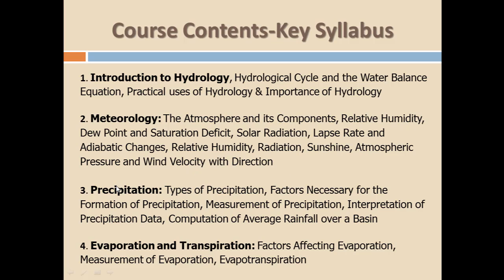Chapter three is very important and is about precipitation. In this chapter we will discuss what precipitation is, its different types and forms, how precipitation forms, how it can be measured, how to present precipitation data, and how to compute average rainfall over any area.